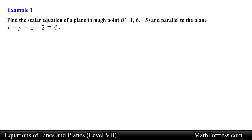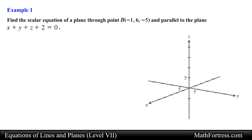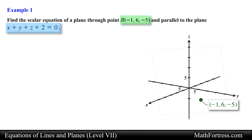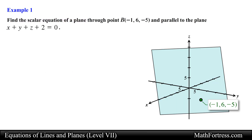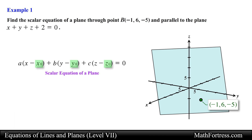Find the scalar equation of a plane through point B and parallel to the plane. In this problem we are given the coordinates of a point and the scalar equation of a plane. We are asked to find the scalar equation of a plane that passes through point B and is parallel to the plane. In order to find the scalar equation of a plane we need a point and a vector normal to the plane.